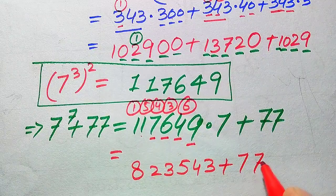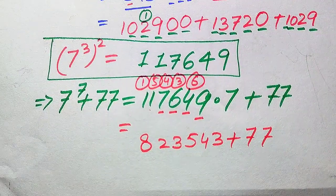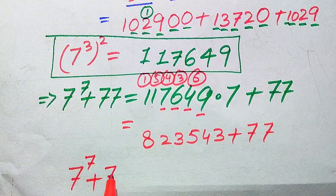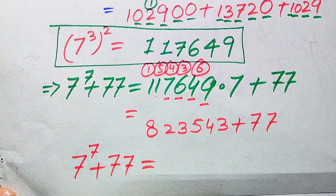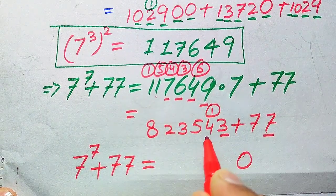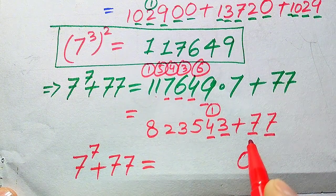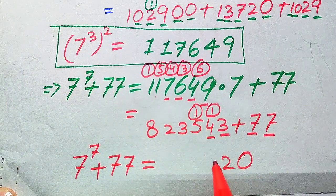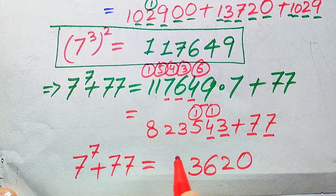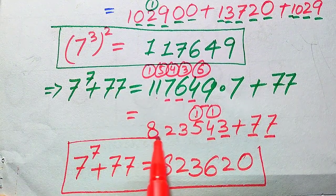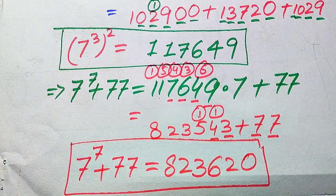In the final step we add 77 to get our final answer. 7 to the power of 7 plus 77: 3 plus 7 is 10, write 0 carry 1; 4 plus 7 is 11, plus 1 is 12, write 2 carry 1; 5 plus 1 is 6; then 3, 2, and 8. So the final simplified form is 823620. Thank you so much for watching this video — please subscribe to my channel for more exciting videos.